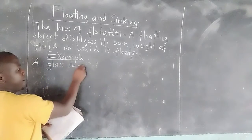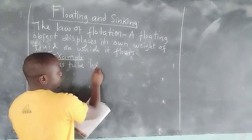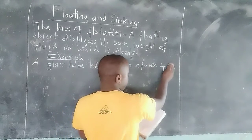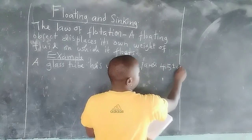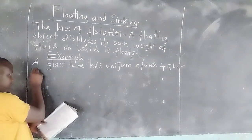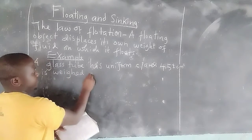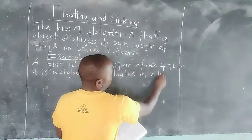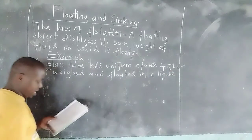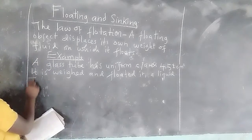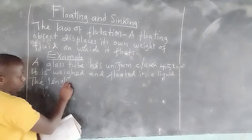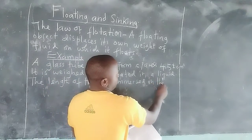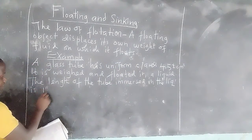A glass tube with a uniform cross-section area of 4.52 centimetres squared is weighted and floated in a liquid. The length of the tube immersed in the liquid is 16 centimetres.